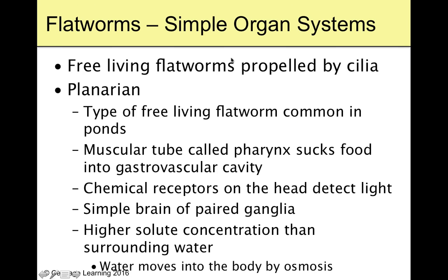Free-living flatworms have to move around, and they're going to be propelled by cilia — little fibers that move on the underside of the flatworm. The most popular example of that is the planarian. It's very popular because you can cut it in half and it'll regrow both halves, and it doesn't matter how you cut it. It's a free-living flatworm found in ponds and really moist habitats — some can be terrestrial, but only in pretty wet areas.